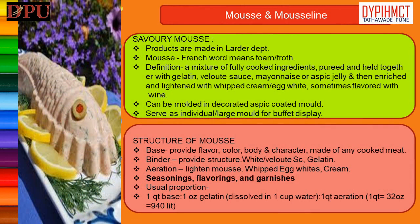Composition or structure of savory mousse. Basically there are four components: base, binder, aeration, and seasonings/flavorings/garnishes. 1. Base ingredients: The mousse's main or base ingredient may be one or a combination of finely ground or pureed cooked or smoked meats, fish, or poultry, cheese or a blend of cheeses, or a puree of vegetables sautéed to intensify flavor and drive off excess moisture. It provides flavor, color, body and character to the product.